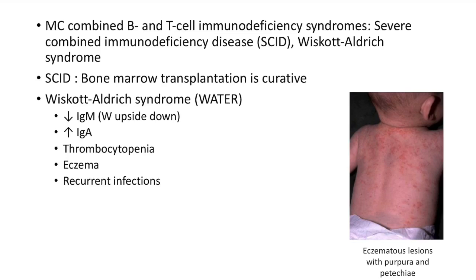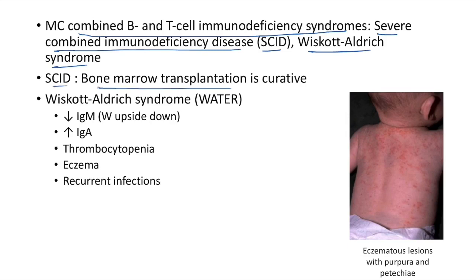Combined B- and T-cell immunodeficiency syndromes include severe combined immunodeficiency disease (SCID) and Wiskott-Aldrich syndrome. For SCID, bone marrow transplantation is curative. Features of Wiskott-Aldrich syndrome remembered by mnemonic WATER: decreased IgM (if you invert W it becomes M), elevated IgA, thrombocytopenia, eczema, and recurrent infections. This picture shows eczematous lesions with purpura and petechiae due to thrombocytopenia.